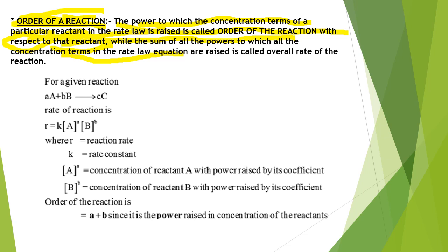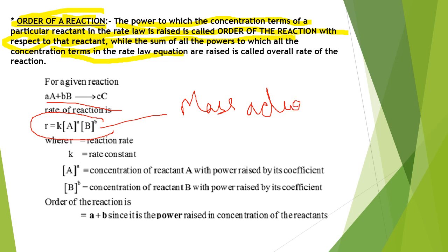The sum of all powers in the concentration terms gives the overall order of the reaction. Suppose I have taken a reaction A plus B gives C. The rate of reaction R equals K times [A] to the power alpha times [B] to the power beta, according to the law of mass action. However, it is not compulsory that all moles of a substance react with the next reactant — it may change.